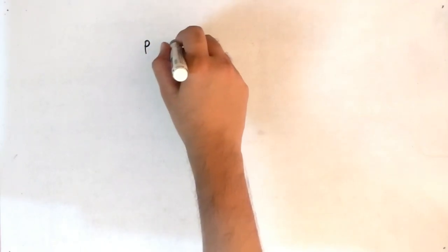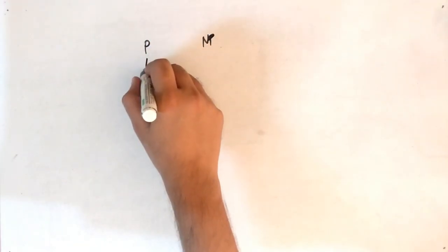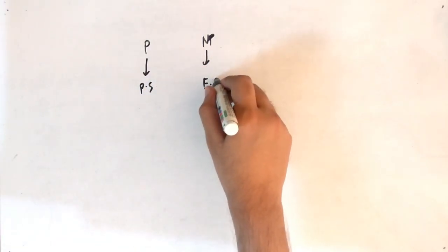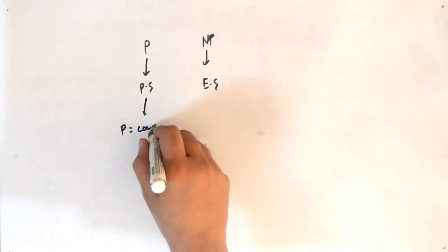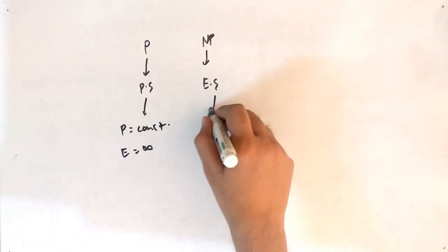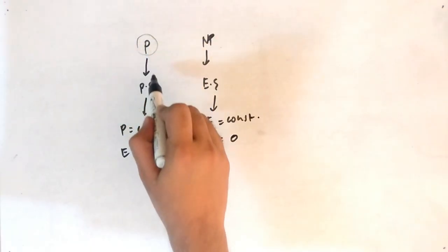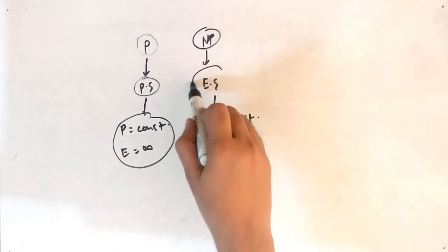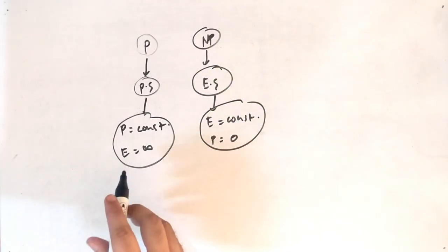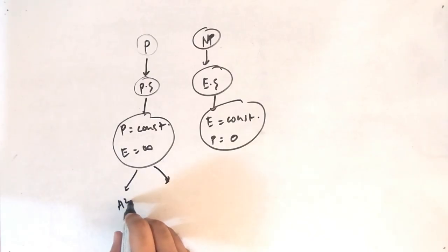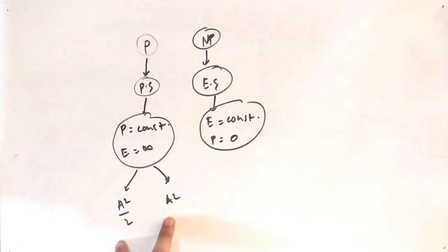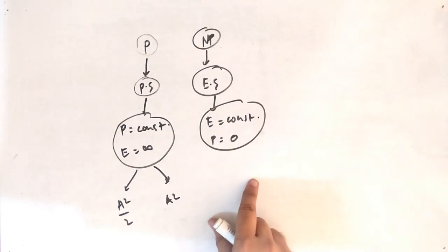The quick basics we studied in continuous time: if the signal is periodic, it is a power signal — power is constant and energy is infinity. If it is non-periodic, it is an energy signal — energy is constant and power is zero. We also saw the trick involving a² or a²/2. If you don't know this, please watch my video on energy and power signals for continuous time.